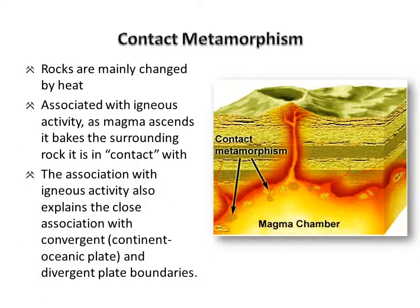Contact metamorphism generally happens on a smaller scale than regional metamorphism, and heat is the primary agent in this metamorphic environment — specifically the heat that comes from a body of magma moving through rock. This type of metamorphism happens when magma comes into contact with the protolith and bakes it, causing the rock to change. For example, if a body of magma moved through limestone, it would bake it, turning it into marble. If high temperatures were present for a long period of time, the marble would be baked further to form a skarn — bodies of rock that can host some pretty cool minerals and precious metals.